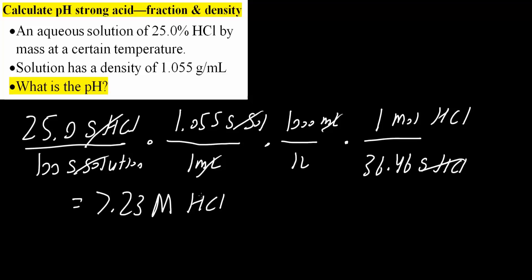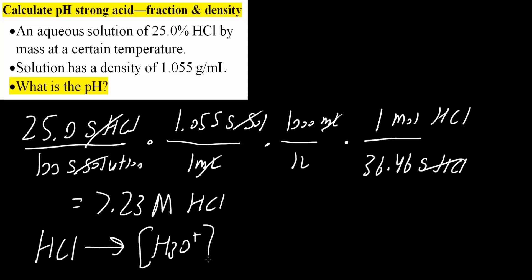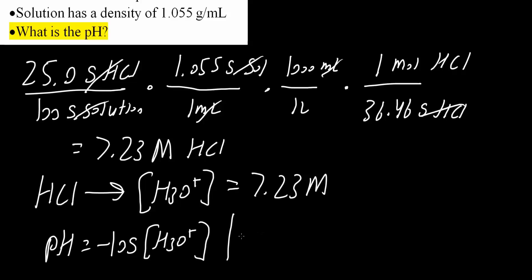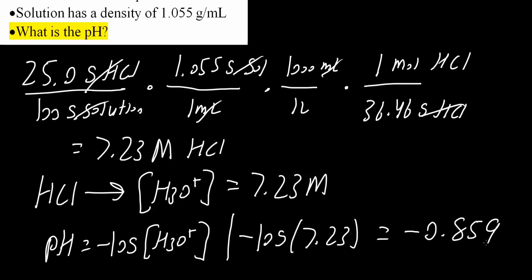HCl is a strong acid which dissociates completely in an aqueous solution, meaning HCl gives us H3O+. So we can say that [H3O+] is 7.23 molar. We want to find the pH. pH is equal to minus log of [H3O+], so pH equals minus log of 7.23, giving us negative 0.859 as our pH. And that's all we need to do for this problem.